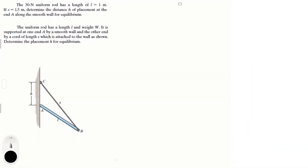Let's do these two problems. The 30 newton uniform rod has a length L of 1 meter and S of 1.5 meters. Determine the distance h of placement at end A along the smooth wall for equilibrium. The second problem is the same thing but express h in terms of L, the weight, and S. I'm going to do these two problems together to save time.